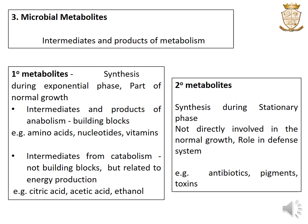Primary metabolites include the intermediates and products of anabolism. These are synthesized as building blocks for the cell. Examples include amino acids, nucleotides, vitamins, etc.